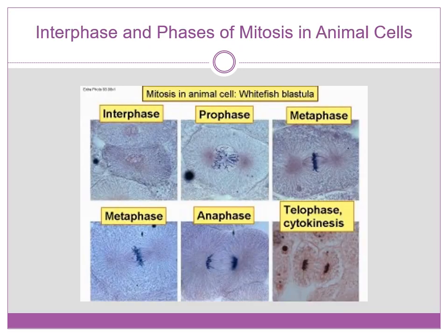In animal cells, here's a cell in interphase. Then if we look at the phases of mitosis: here is prophase, metaphase, another view of metaphase, anaphase, telophase, and cytokinesis.